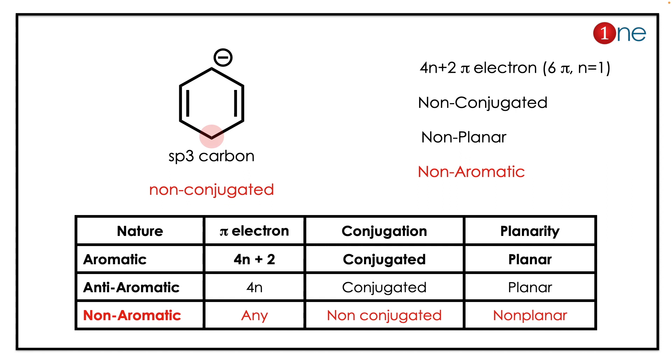To find the aromaticity, you should know the Huckel rule. For the Huckel rule, you should have conjugation and planarity, as well as pi electron count. If you look at the conjugation, the system is not conjugated because sp3 carbon is inside, so delocalization is not possible.